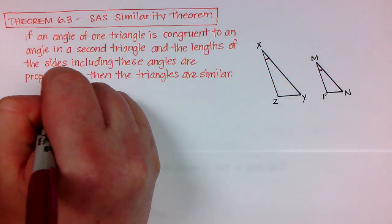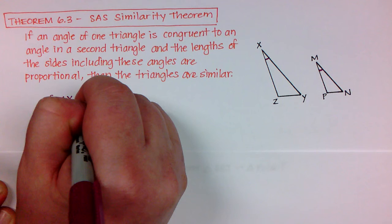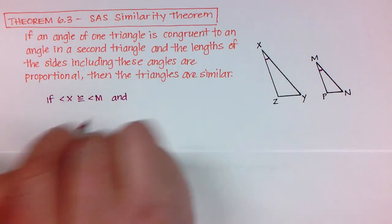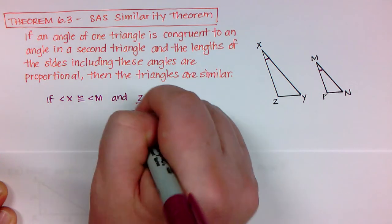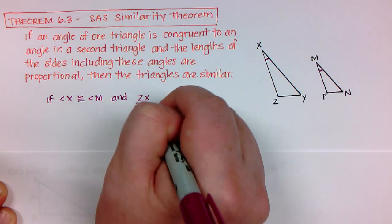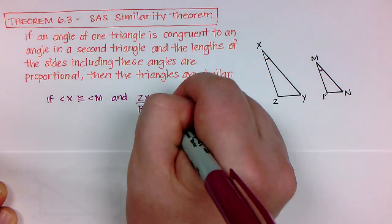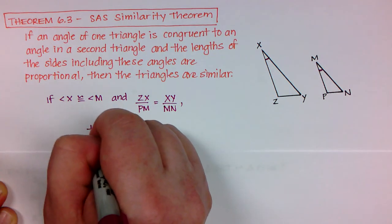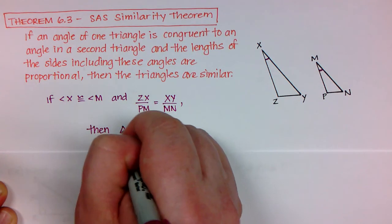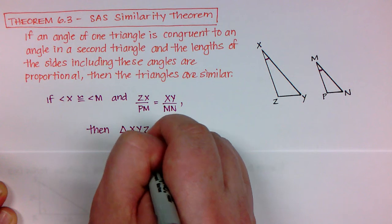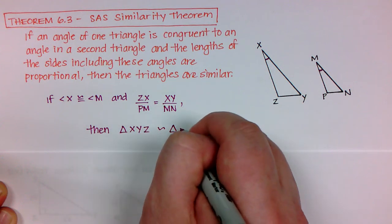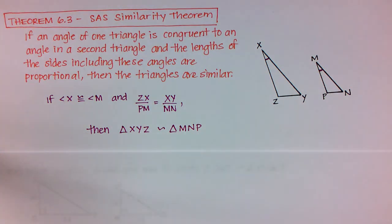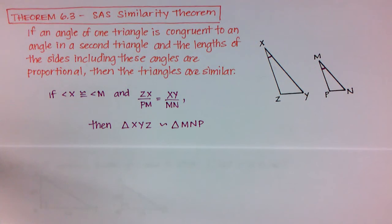So if angle X is congruent to angle M and let's do ZX to PM. If that equals XY compared to MN then I can conclude that triangle XYZ is similar to triangle MNP. Okay, so we're going to end with one last example.